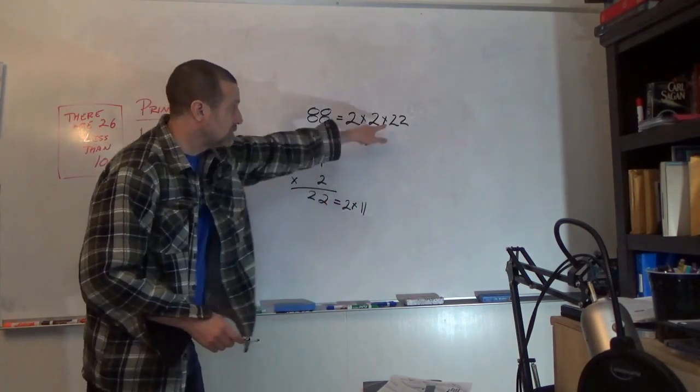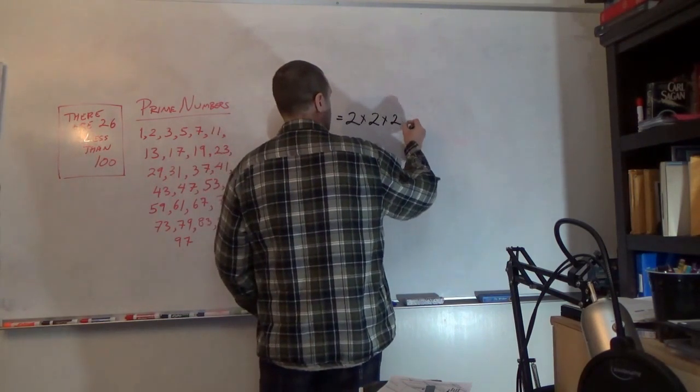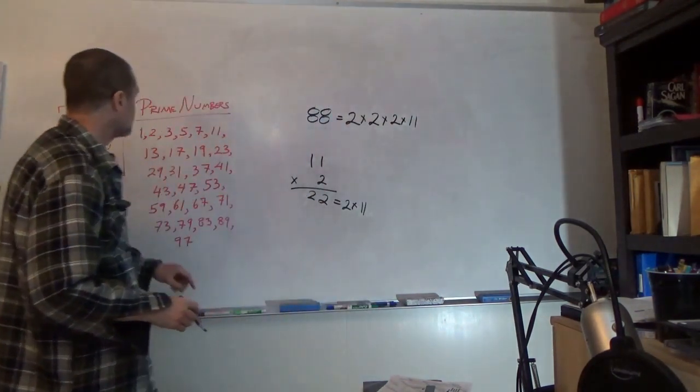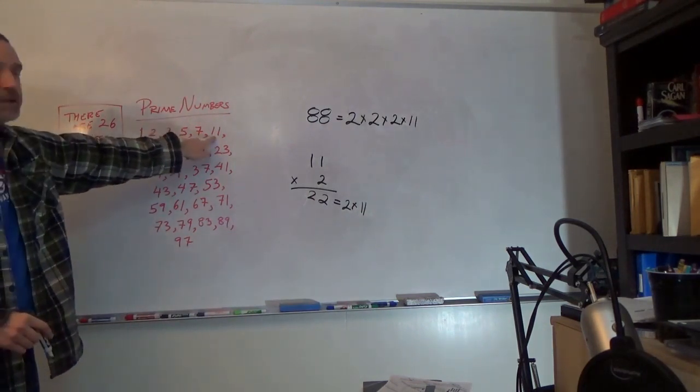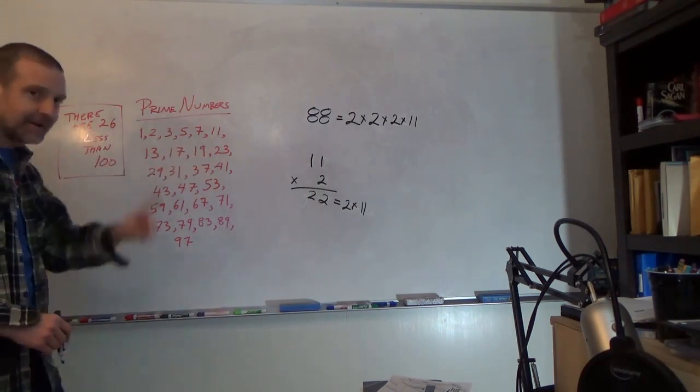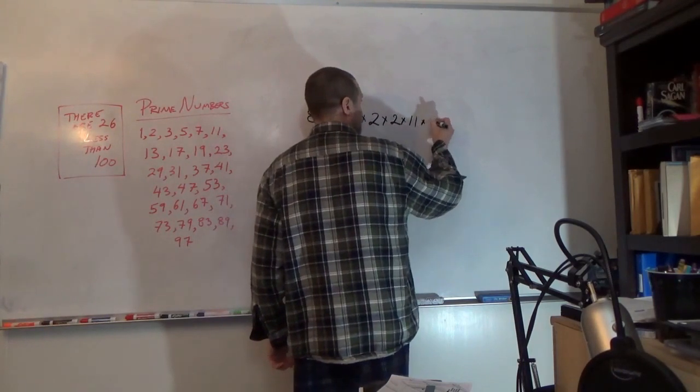So I can substitute this in for 22. So now 2 is a prime number, and 11 is a prime number. So we've got all the prime numbers we're missing times 1.